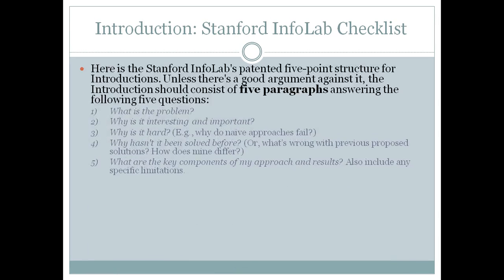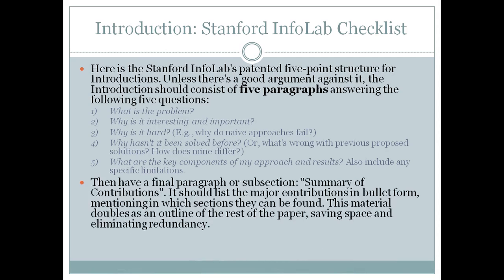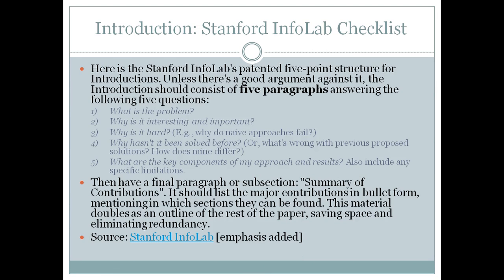The Stanford InfoLab checklist would be a good starting point for a new paper writer. They have a five-point plan — five paragraphs for your introduction: What's the problem? Why is it interesting? Why is it hard? Why hasn't it been solved before? And what are the key components of your approach? That is a nice way of laying it out. They also add a sixth paragraph — a summary of contributions — which is probably a good idea to be explicit about what your paper is actually adding to the existing body of knowledge. This link is active; you can click on it and see this directly.